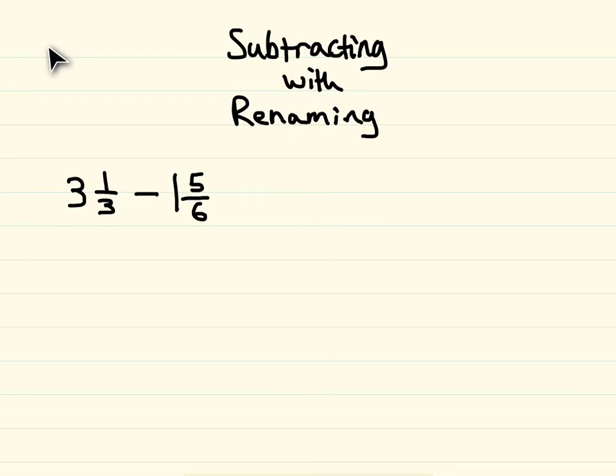Well, they can both become 6. So 3 times 2 and 1 times 2 will make our denominators the same. So we have 3 and 2/6, which is the same thing or equivalent to 3 and 1/3, and it has the same denominator as 1 and 5/6.